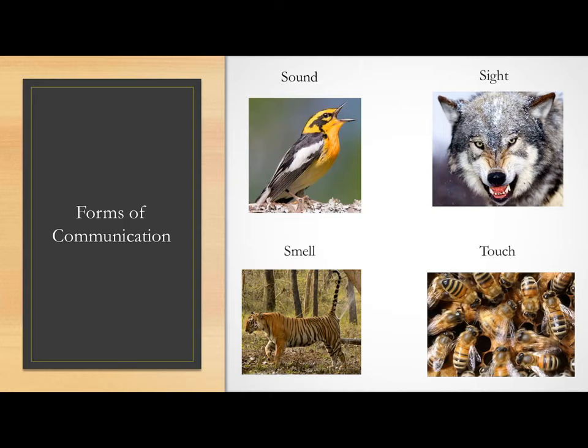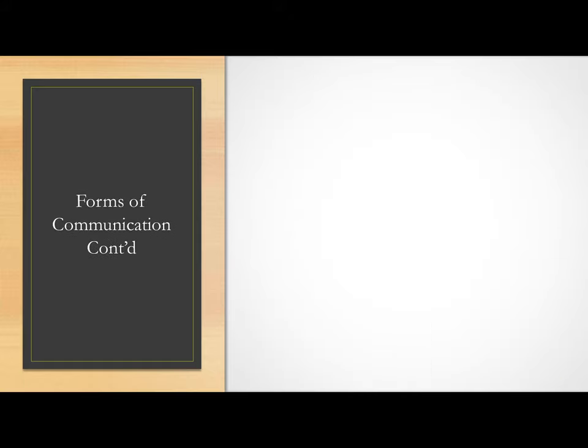So how can you tell that some feature of an animal is a communication signal? A signal, by definition, is a message that a species has evolved to communicate something. A signal can be intentional or not, but it has to typically be beneficial to the animal that sends the message.